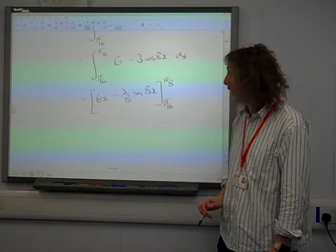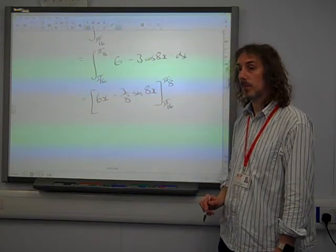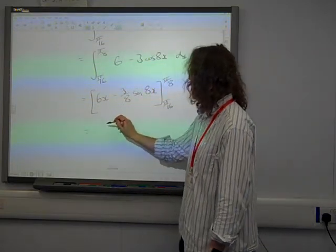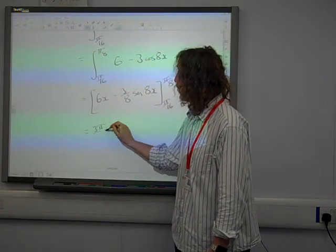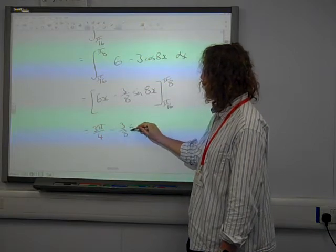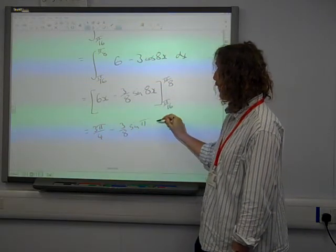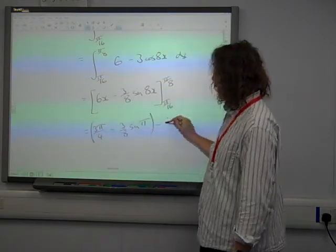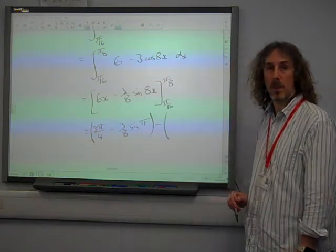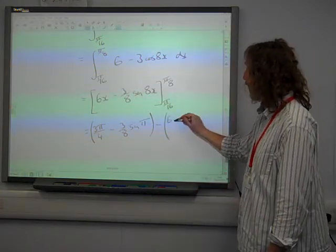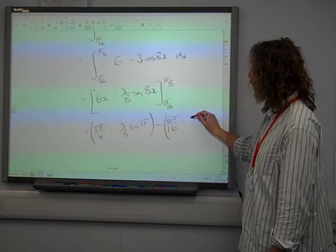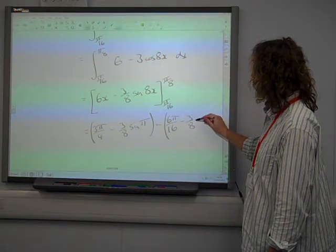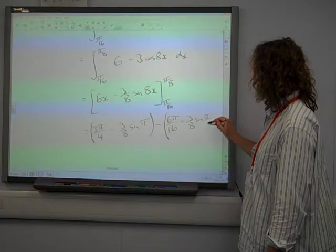Sub in some values. So we've got 6 pi over 8. That's 3 pi over 4. Take away 3 eighths of sine pi. And then we've got 6 pi over 16. I should have changed that. But anyway, take away 3 eighths of sine pi by 2.